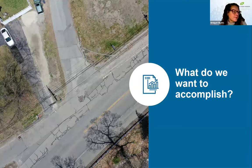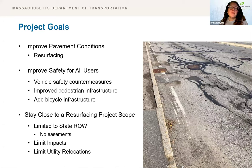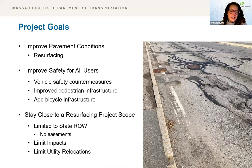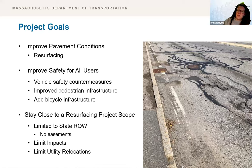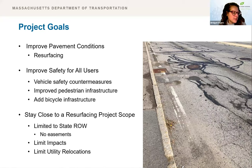The major goals of this project include improving pavement conditions by resurfacing and providing safe accommodations for all users — accomplished by implementing vehicle safety countermeasures, improving pedestrian infrastructure, and adding bicycle infrastructure. Another goal is to accomplish the project needs while keeping the scope closer to a resurfacing project versus a full corridor reconstruction. Being programmed as a resurfacing project, the design must work within the state-owned roadway layout with only minimal impacts to utilities and properties.